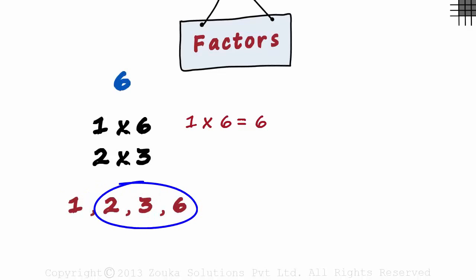Similarly, 2, 3 and 6 are also factors. But the number 4 is not a factor of 6 because it cannot be multiplied with a natural number to get a 6.